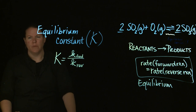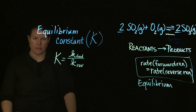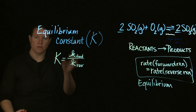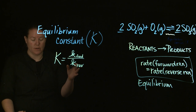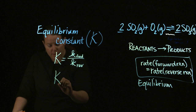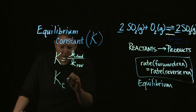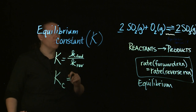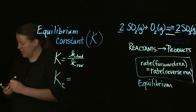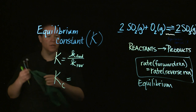To understand these little k's — the rate constants — you would need some knowledge about kinetics. If you have that knowledge, great. If you don't, we're not going to think about large K, the equilibrium constant, this way most of the time, so don't worry about it. The way we're going to think about it is in terms of values for specific reactants and products in the balanced chemical reaction.